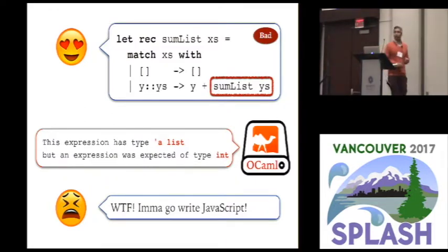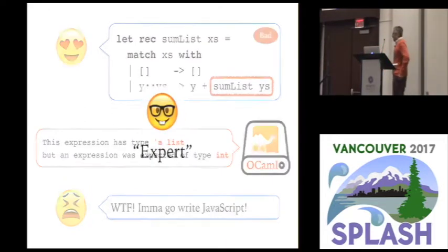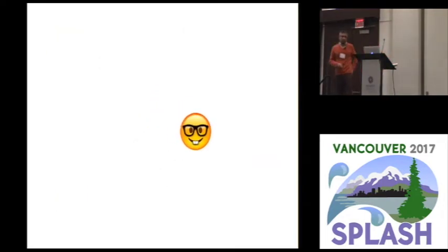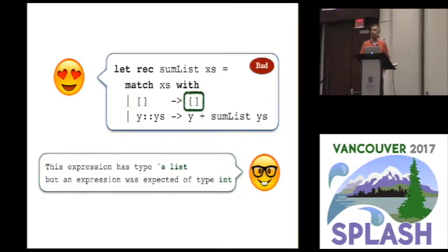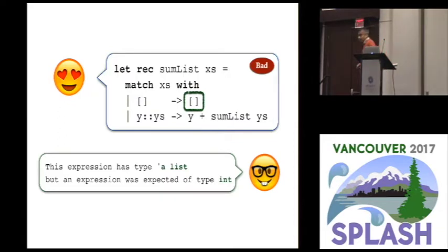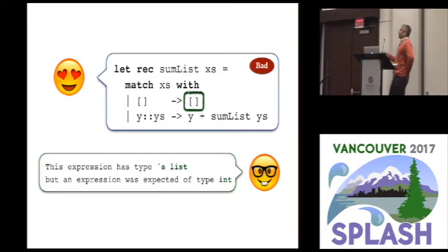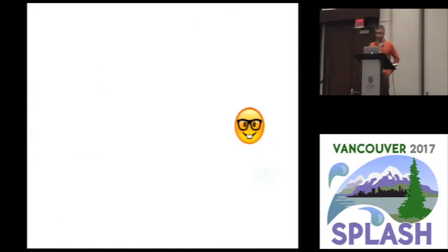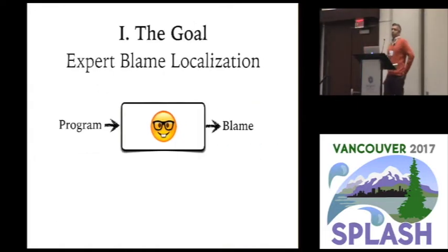How would an expert instead approach this problem? They would say: clearly you didn't mean to put a list over there, because you're trying to return an integer as an output. Really what you want to do is replace that expression with something that's an integer. At this point, the novice is like: ah, yes, of course — I should have put a zero over there. Now the compiler is happy, and we win.